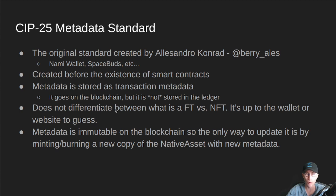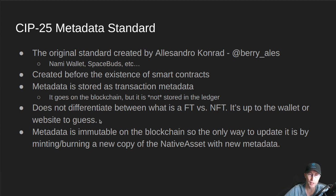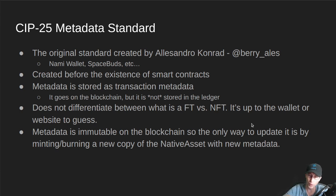CIP25 does not really differentiate between what a fungible and non-fungible token is — it's really just up to the wallet or website to guess. Usually they do a guess by saying, how many of these are there? If there's just one, categorize it as an NFT; if there's more than one, make it a fungible token. It's not part of the metadata standard to determine that. Metadata is immutable on the blockchain, so the only way to update it is by minting and burning a new copy of the native asset with new transaction metadata, which then gets picked up by whatever indexer is looking at all this transaction metadata.